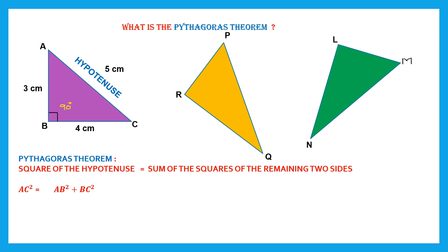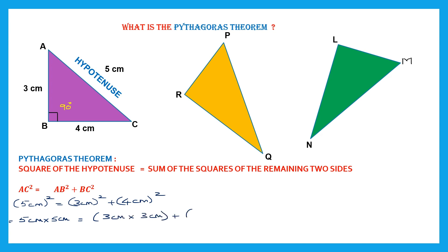Let's substitute with the values given. AC is 5 cm, so 5 cm squared should be equal to AB squared — AB is 3 cm, so 3 cm squared — plus BC, which is 4 cm squared. So 5 cm squared means 5 cm into 5 cm, equal to 3 cm into 3 cm plus 4 cm into 4 cm. 5 fives are 25 cm squared, equal to 3 threes — 9 cm squared — plus 4 fours — 16 cm squared.